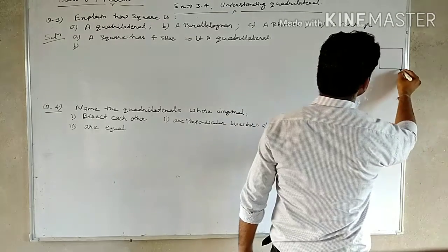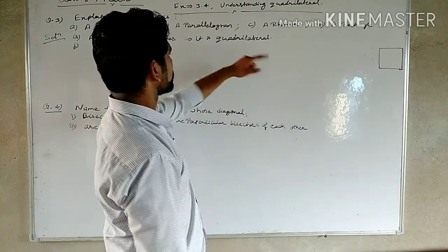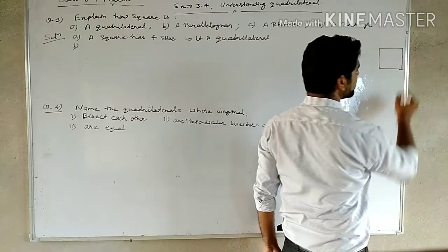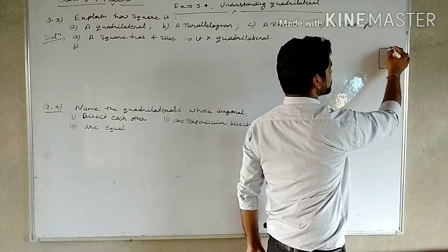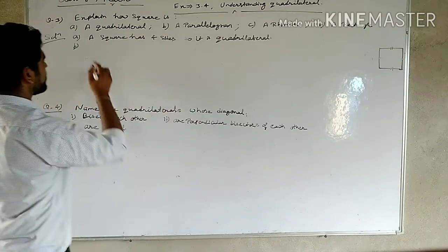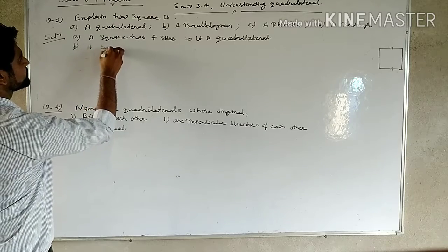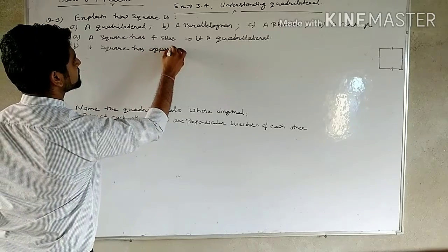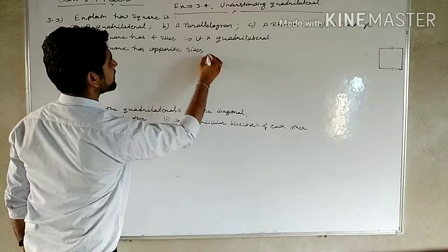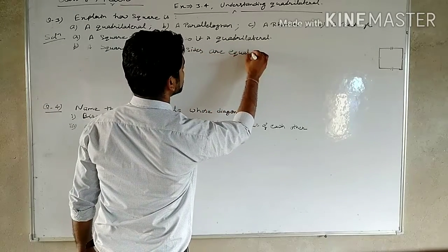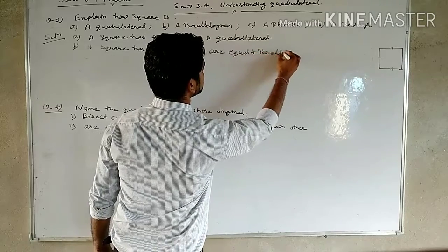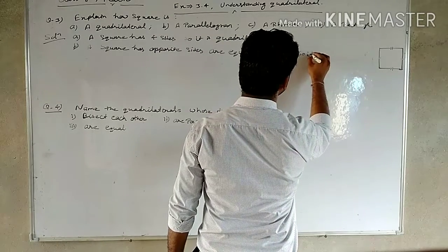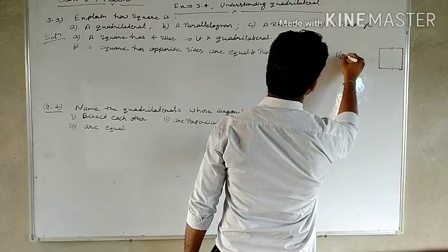Next, explain how a square is a parallelogram. In a square, the opposite sides are parallel and equal. According to the properties of the square, the opposite sides are equal and parallel. So a square is a parallelogram.